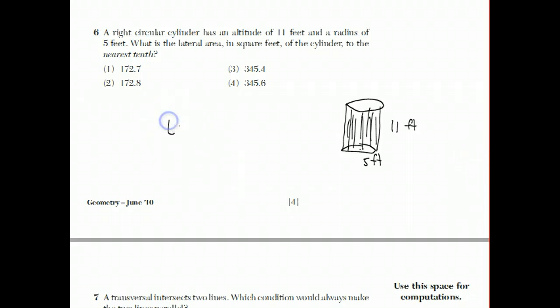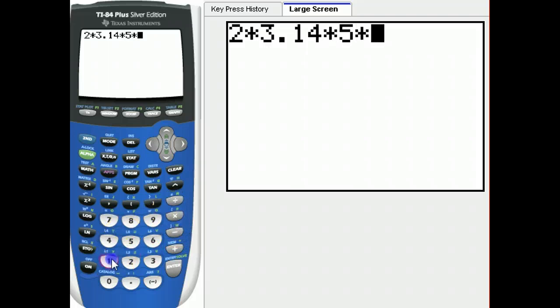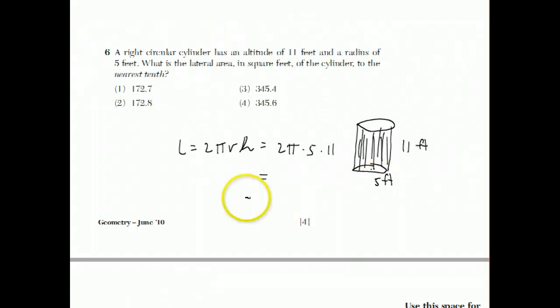So back to here. Lateral is 2πRH, which is 2π. The radius is 5. The height, which is the altitude, is 11. And then we run this through our calculator. On our calculator we say 2 times π, you could just say 3.14, times 5, times 11. We get our answer, which is 345.4 and that's an answer choice, choice number 3.